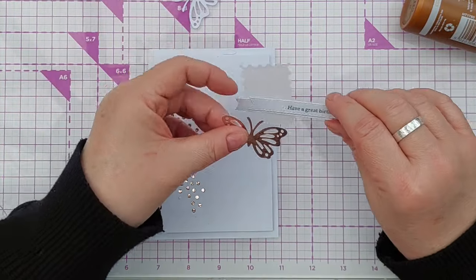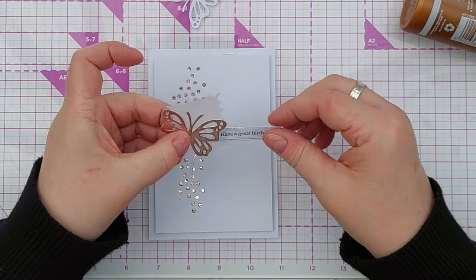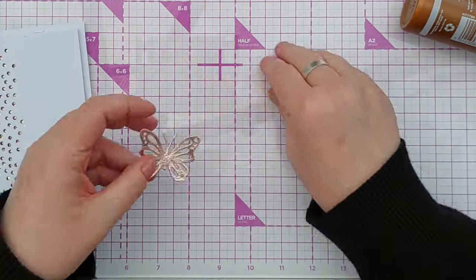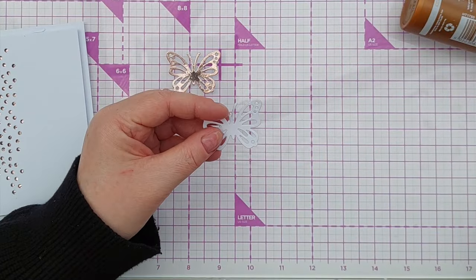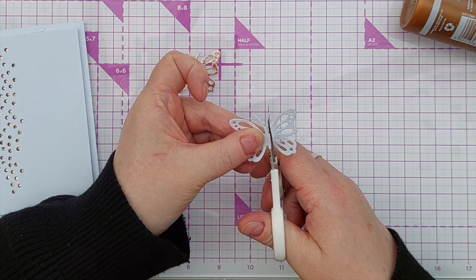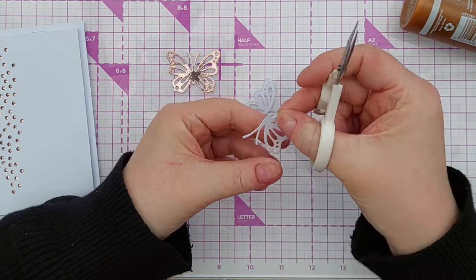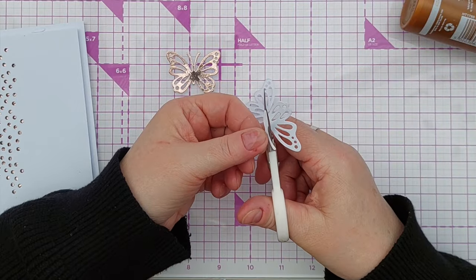Now before we do anything else I'm just going to pop the butterfly. Actually I think I'll make my butterfly fully before I do anything else. So I want to give my butterfly a white body so there is a bit of difference between the body and the wings of the butterfly.